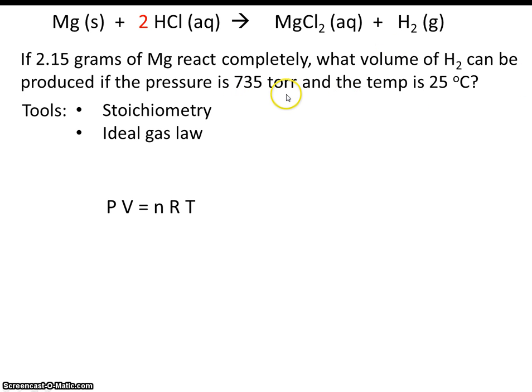So 735 torr and 25 degrees C will need to be converted to atmospheres and Kelvin. Here's the conversion between torr and atmospheres. By now, you should be familiar with this conversion. And you should also be familiar with converting Celsius to Kelvin.